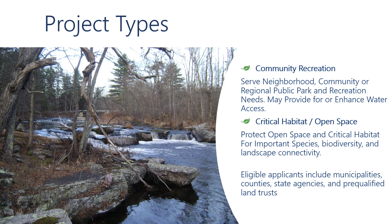There are two acquisition project types that an organization may apply for: community recreation projects and critical habitat and open space projects. Community recreation may provide land for a local or regional park, enhanced water access, or provide open space within a community. Critical habitat open space projects often provide landscape connectivity and improved habitat for plant and animal species. These projects are also integral in protecting our water resources. Eligible applicants include municipalities, counties, state agencies, and pre-qualified land trusts. If you are unsure if your organization is an approved pre-qualified land trust, please contact your regional advisor and they will assist you.